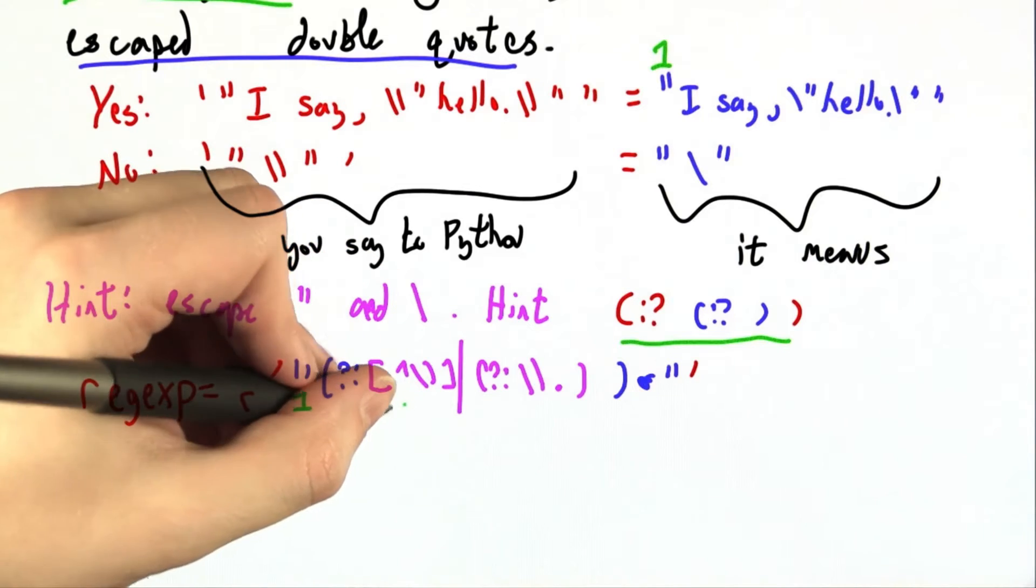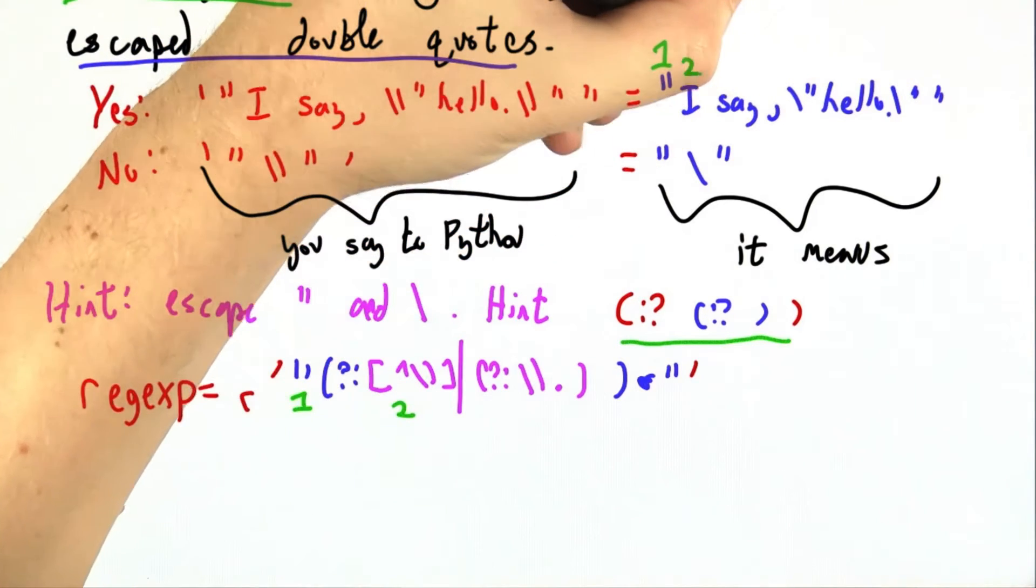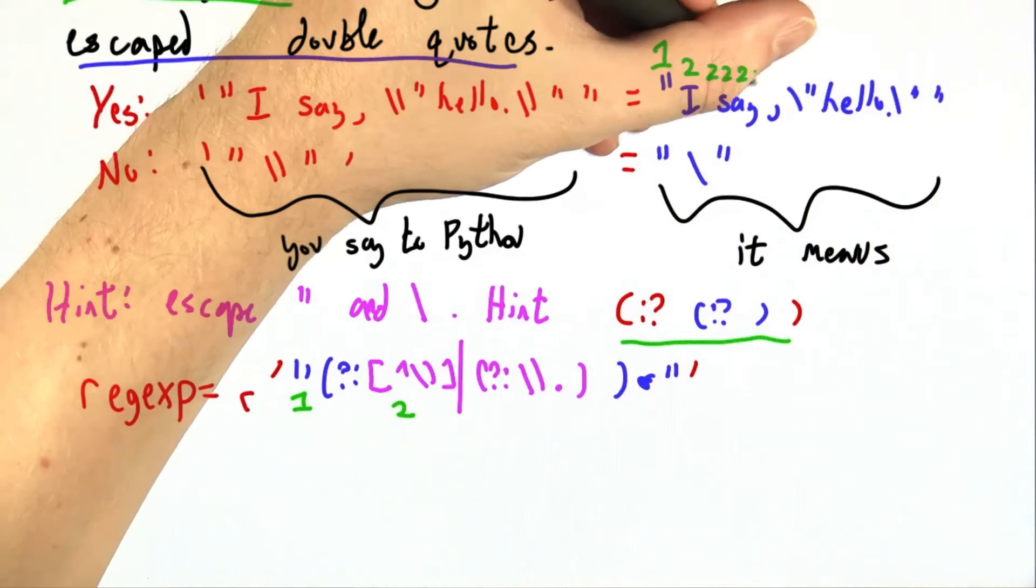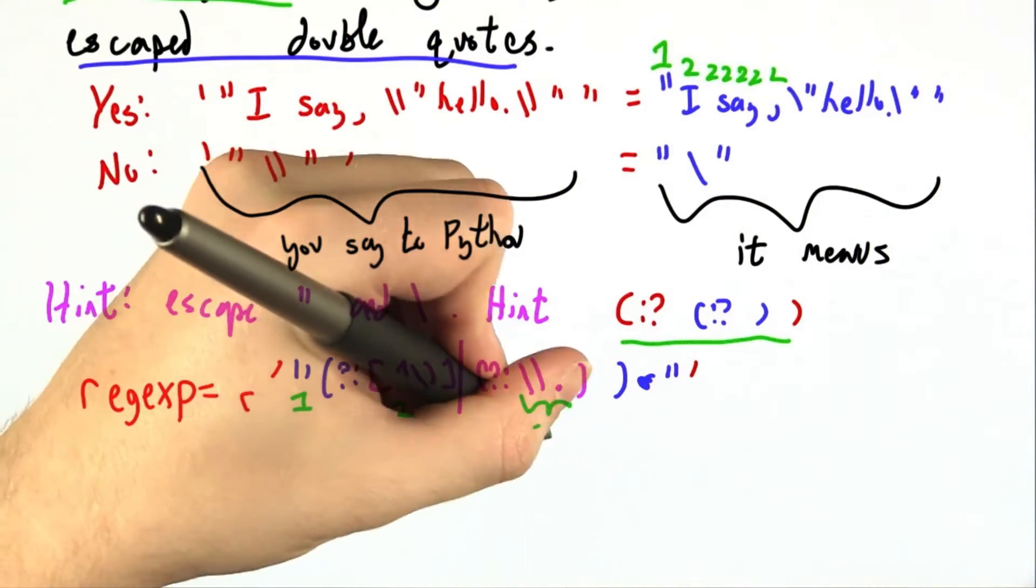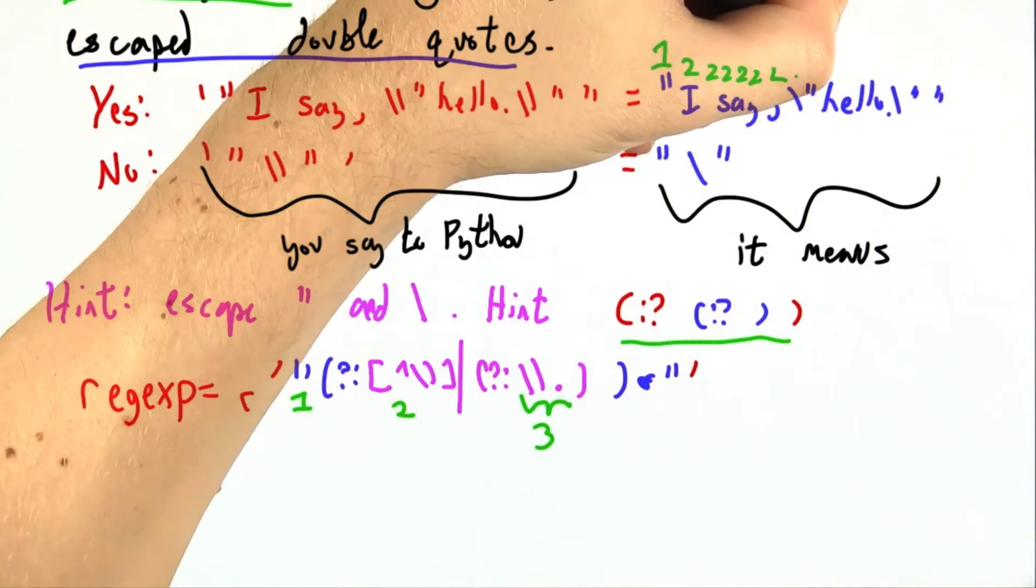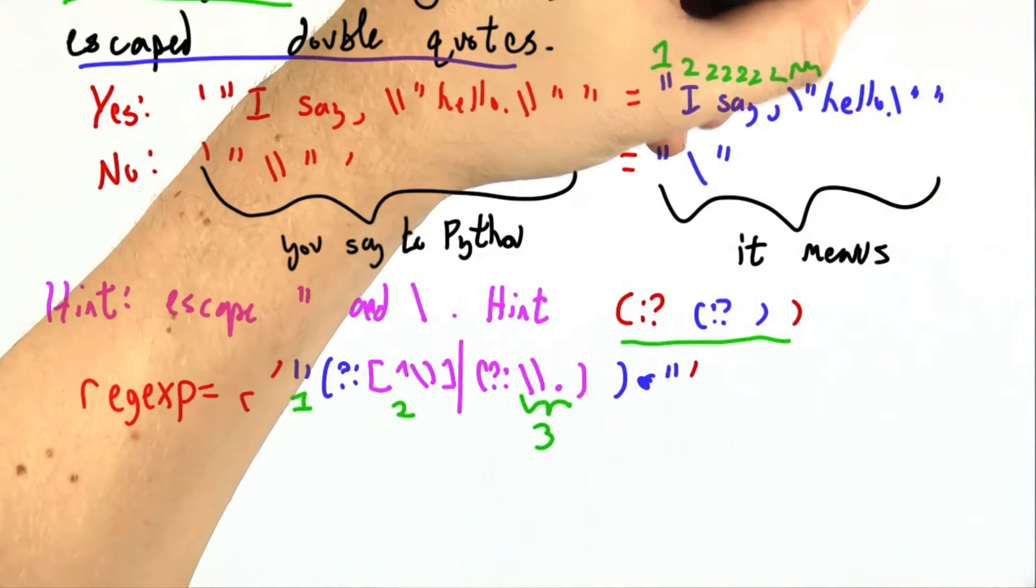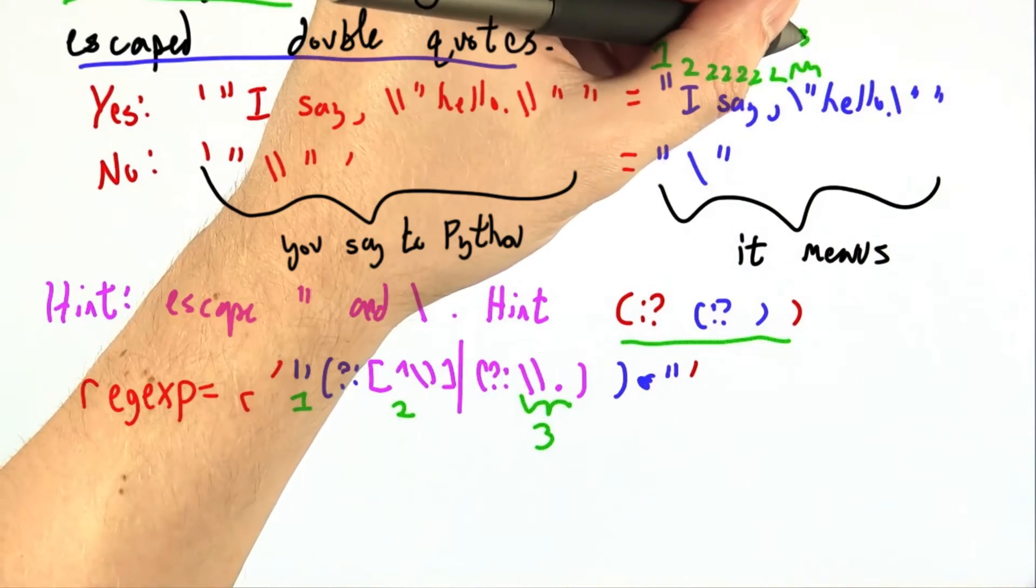That matches things like this opening quote in the string. Then in here we have anything that's not a backslash. That's two. That's I space say say comma, but then eventually we do get to a backslash. Over here we have a two character sequence that's a backslash followed by a dot. These two characters, the backslash followed by the quote, they are three.